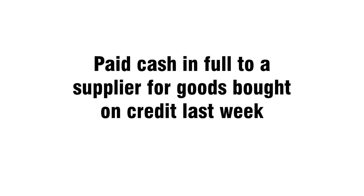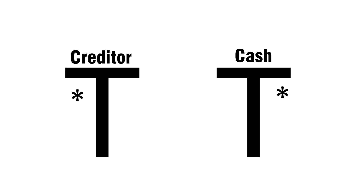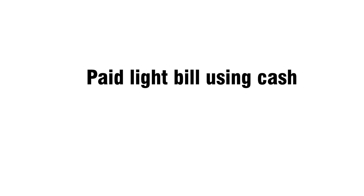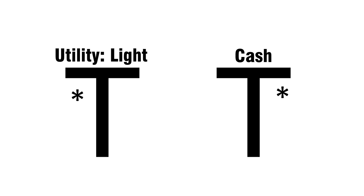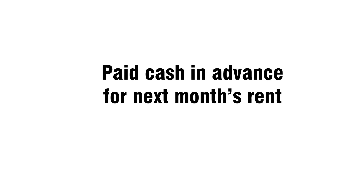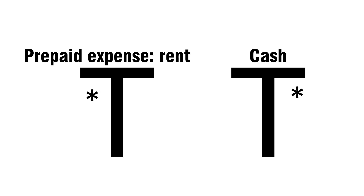Paid cash in full to a supplier for goods bought on credit last week: debit creditor, credit cash. Paid light bill using cash: debit utility light, credit cash. Paid cash in advance for next month's rent: debit prepaid expense rent, credit cash.